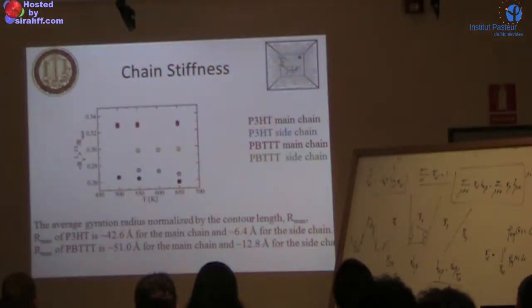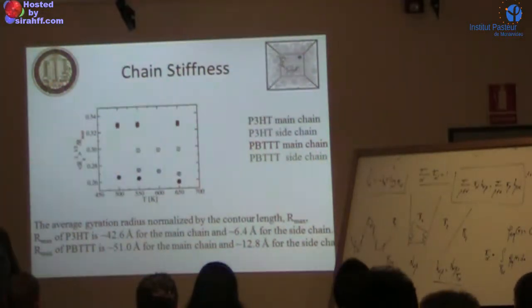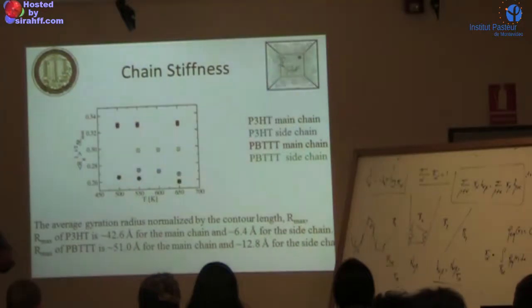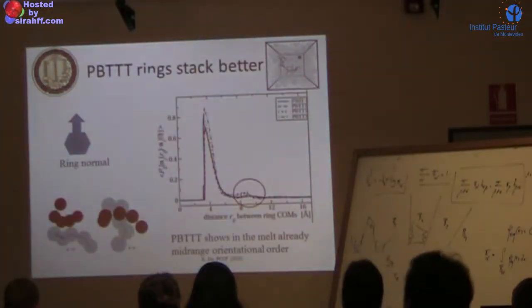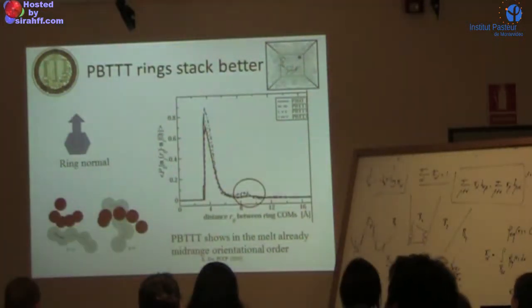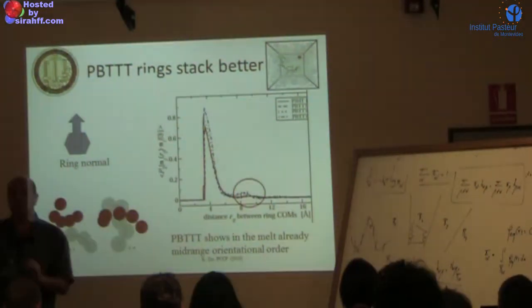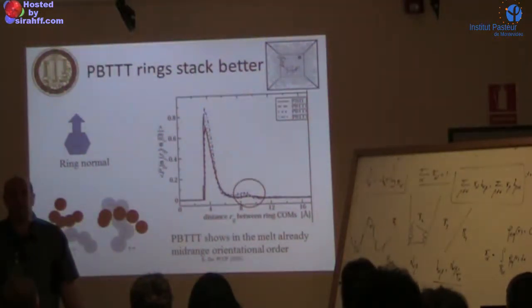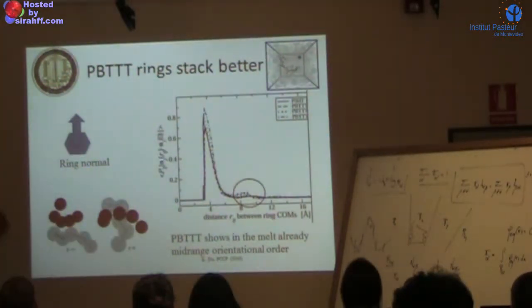This is a static orientational correlation function - P2 of R, the second Legendre polynomial as a function of distance. We take the ring normal - these rings along the backbone defined by the ring normal - and calculate the angle between ring normals at distance r apart. Then we calculate the second Legendre polynomial.